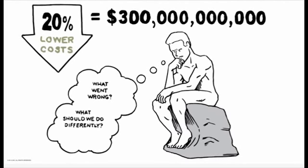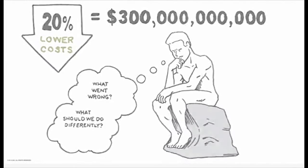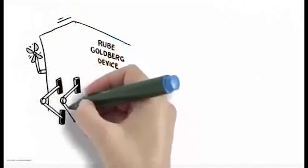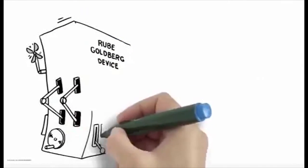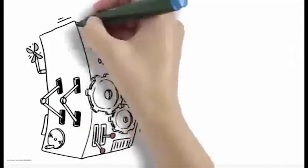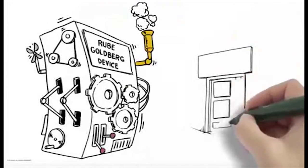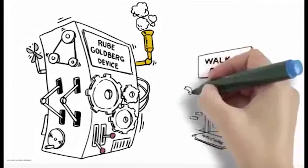So what went wrong over the last 40 years of population health, and what should we do differently this time around? Well, we created an enormously expensive Rube Goldberg device to prevent largely unpreventable single events among the healthy majority. So what we need now are easily accessible, low-cost solutions for simple problems, like walk-in clinics.